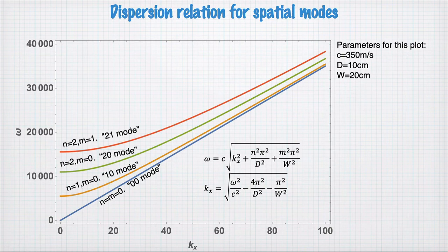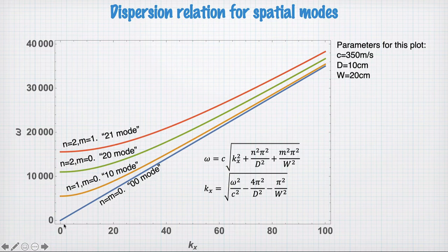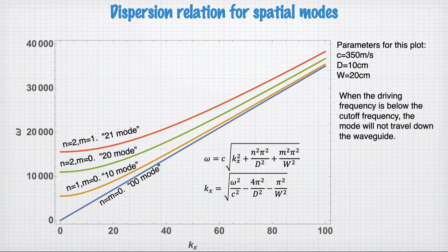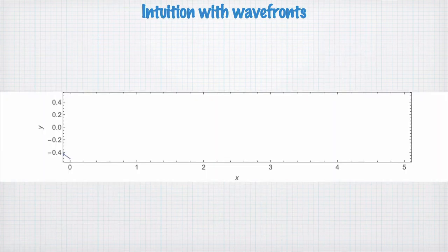Plotting the dispersion relation — omega versus kx for different modes — we see the n = m = 0 mode exists for all frequencies as a straight line, just like free space. Higher-order modes only appear above a cutoff frequency high enough to support a standing wave in a transverse dimension. Below cutoff, those modes cannot exist. At different driving frequencies we support different numbers of modes.